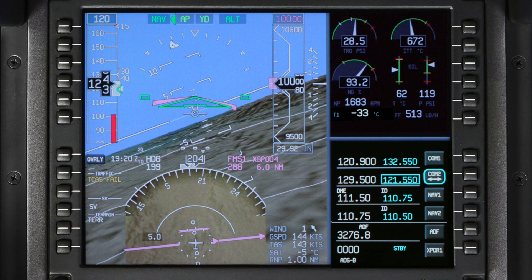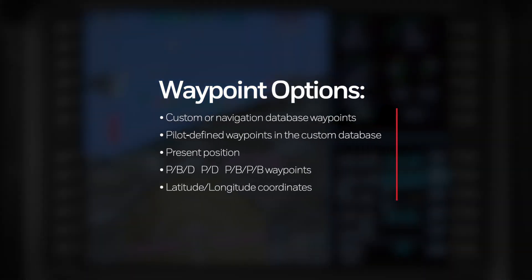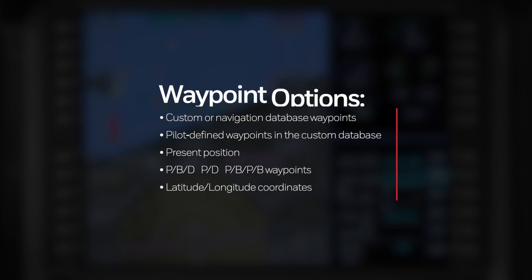You can build a search pattern based on the following waypoint options: custom or navigation database waypoints that are not part of departure or arrival procedures in the flight plan, pilot-defined waypoints in the custom database, present position, place-bearing distance, place-distance, place-bearing-place-bearing waypoints, and latitude-longitude coordinates.